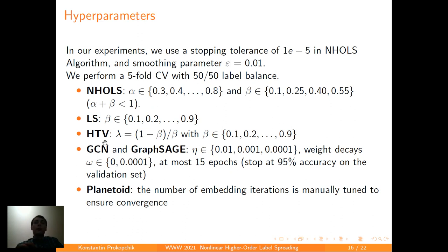For all experiments, we use the stopping tolerance of 10 to the power of minus 5, and the smoothing parameter epsilon of 10 to the power of minus 2. For each of the algorithms, we perform a five-fold cross-validation with 50-50 label balance. For our algorithm, we also have a grid of two parameters, alpha and beta, and the third one will be 1 minus alpha minus beta, because it is not that important for the algorithm. For LS, we have just beta, and the second one will be 1 minus beta. For HTV, we have again the same grid as we did for LS. For neural network methods, we have three learning rates, two weight decays, at most 15 epochs, and we also stop at 95% accuracy on the validation set. And for the planetoid, we didn't tune any parameters during the cross-validation, so we pre-tuned the number of embedding iterations to ensure convergence of the algorithm.